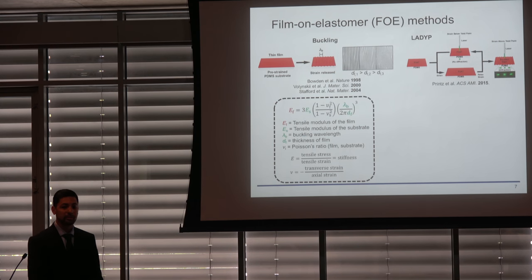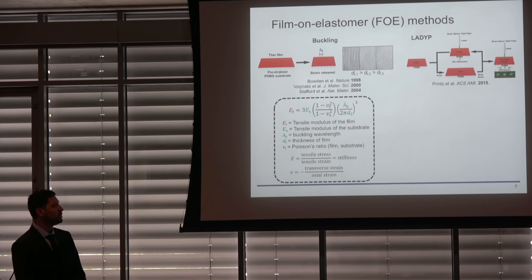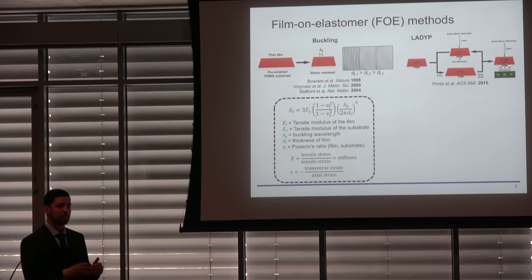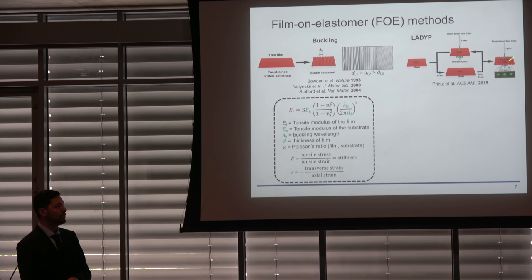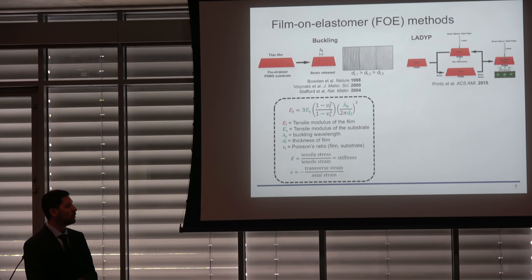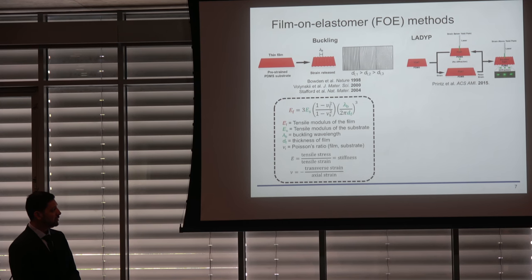To extract the yield point, we use a method first demonstrated in our lab by Dr. Adam Printz in 2015. By laminating a thin film onto an unstrained elastomer and cyclically and incrementally loading and unloading it—say from 0 to 1% back to zero, then 0 to 5% back to zero—upon surpassing the yield point, the film permanently elongates. When you release the strain in the elastomer, surface buckles appear, which can be observed optically or by laser diffraction.